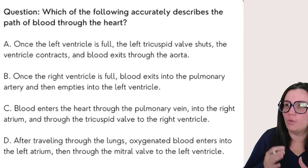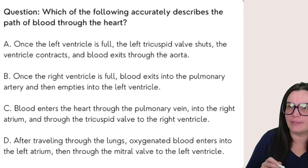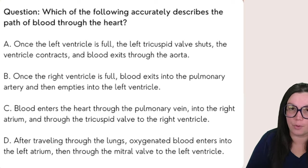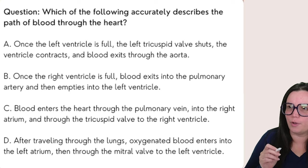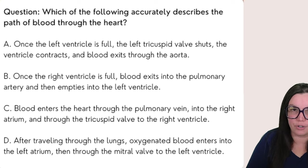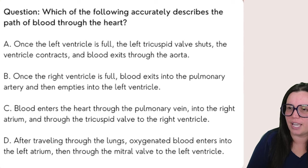So let's start with our first question: which of the following accurately describes the path of blood through the heart? Is it A — once the left ventricle is full, the left tricuspid valve shuts and the ventricle contracts and the blood exits through the aorta? B — once the right ventricle is full, blood exits into the pulmonary artery and then empties into the left ventricle? C — blood enters the heart through the pulmonary vein into the right atrium and through the tricuspid valve to the right ventricle? Or D — after traveling through the lungs, oxygenated blood enters into the left atrium, then through the mitral valve to the left ventricle?